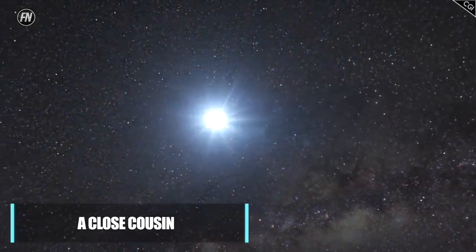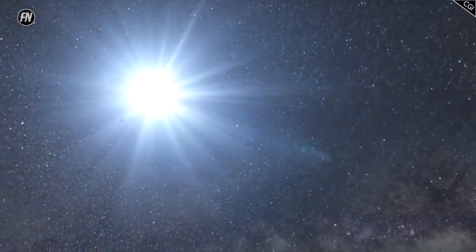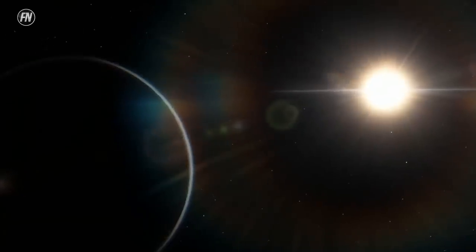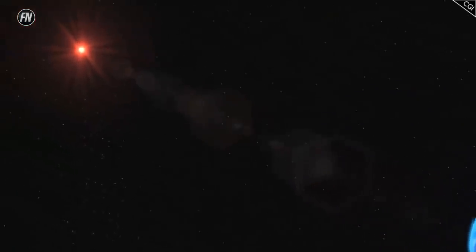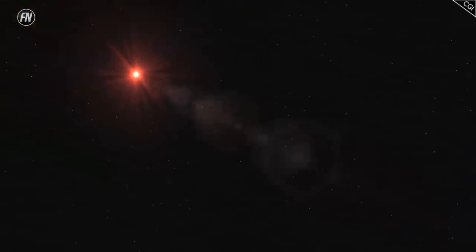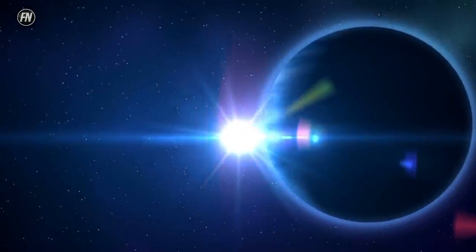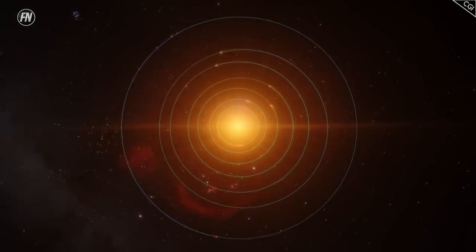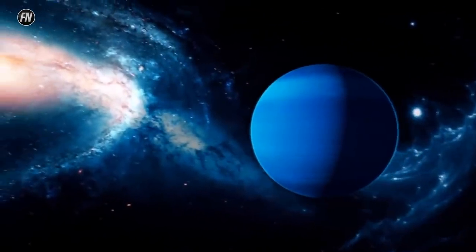A close cousin. The exoplanet GJ357d is around twice the size of Earth but also has six times its mass. It too falls in the habitable zone and likely has a dense atmosphere that could be able to trap enough heat close to the planet to allow liquid water to form on its surface. It orbits a star that is a third of the size of our own and around 40% closer. A year is 55.7 days and the distance is around a fifth of the Earth from our sun, meaning it's very likely to have Earth-like conditions.